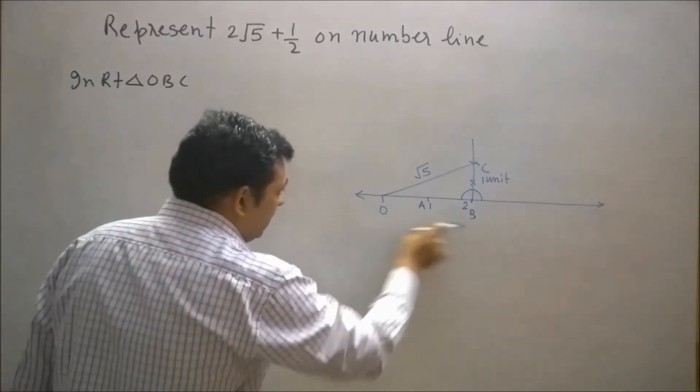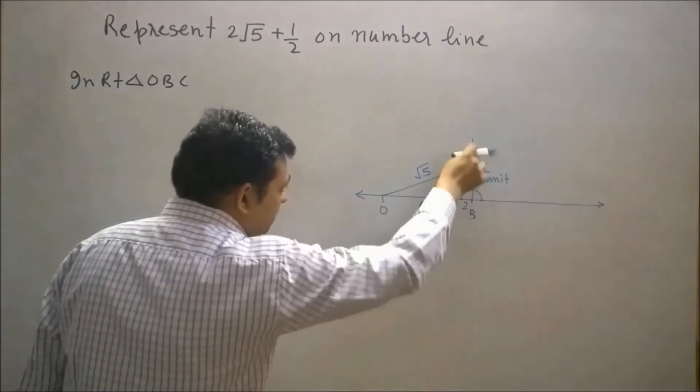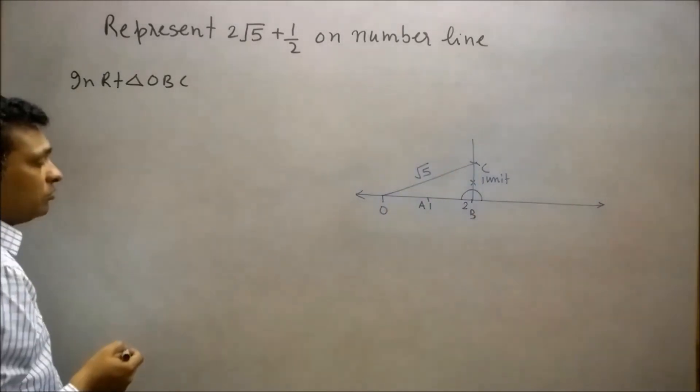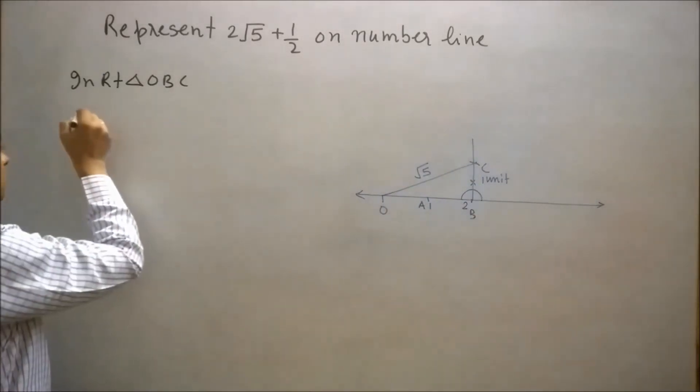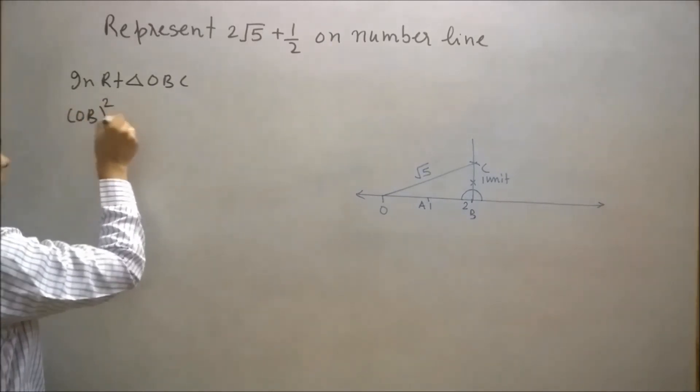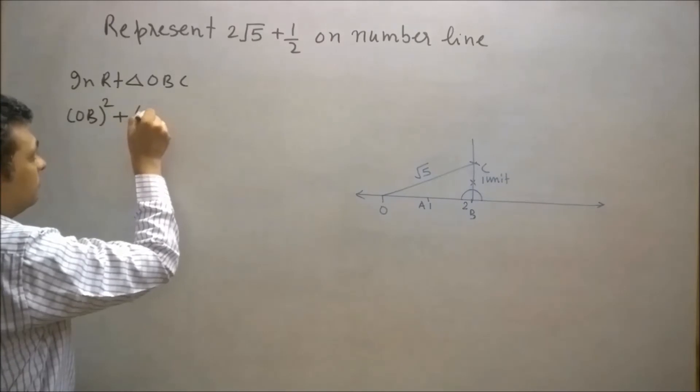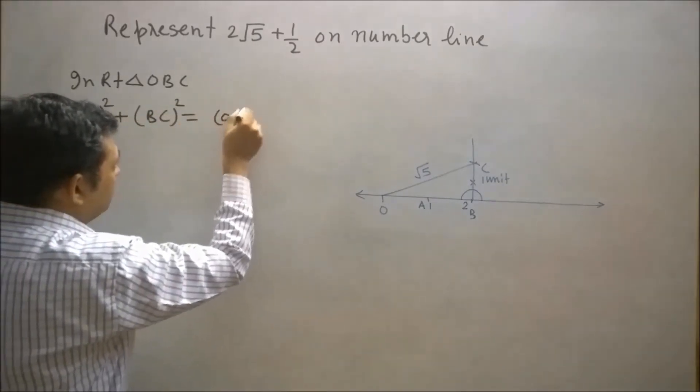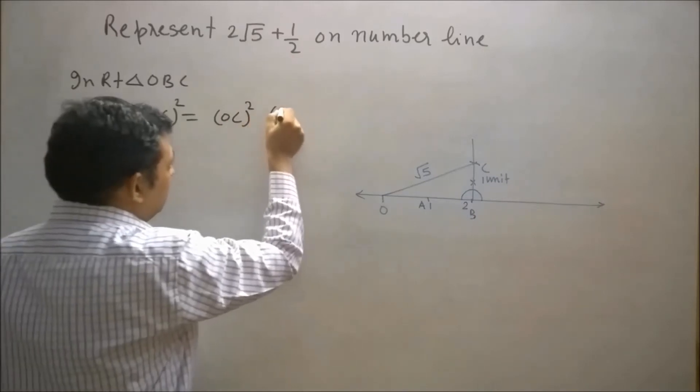Here OB is at two unit distance and BC is one unit distance. So square of OB plus square of BC equals square of OC by Pythagoras theorem.